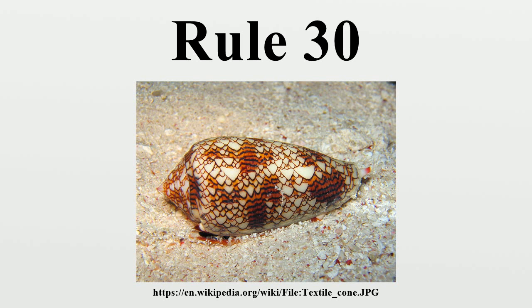Rule 30 is so named because 30 is the smallest Wolfram code which describes its rule set. The mirror image, complement, and mirror complement of Rule 30 have Wolfram codes 86, 135, and 149, respectively. In all of Wolfram's elementary cellular automata, an infinite one-dimensional array of cellular automaton cells with only two states is considered, with each cell in some initial state.